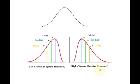This is also called positive skewness because the tail is on the positive end of the number line, and this one over here is negatively skewed because the tail is tending towards the negative on the number line.